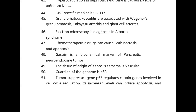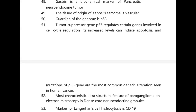Guardian of the genome is P53. Tumor suppressor gene P53 regulates certain genes involved in cell cycle regulation; its increased levels can induce apoptosis. Mutations of the P53 gene are the most common genetic alteration seen in human cancer.